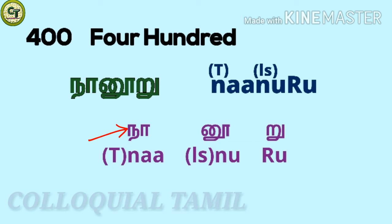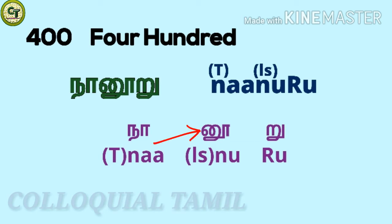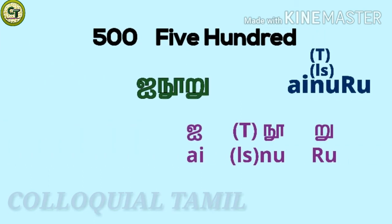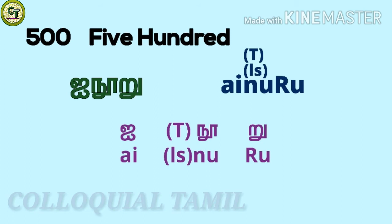For 400: naa noo ru. Naa is a long sound letter. This naa belongs to the group of na letters which comes after the group of tha letters, so I put capital T to represent it. While pronouncing it, your tip of the tongue touches the back of your teeth. Then noo — a long sound letter — this noo belongs to the group of small naa letters. While pronouncing it, your tip of the tongue touches the starting roof of your mouth right above your teeth. Then ru, a short sound letter. Together: naa noo ru.